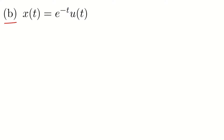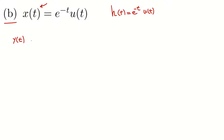This is question 2.11 part b. We have an input signal and the impulse response of this LTI system is e^(-t) · u(t), where u(t) is a unit step function. We want to compute the system response to this input signal, and we know that equals the convolution between x(t) and h(t).